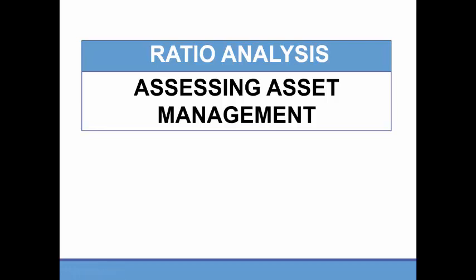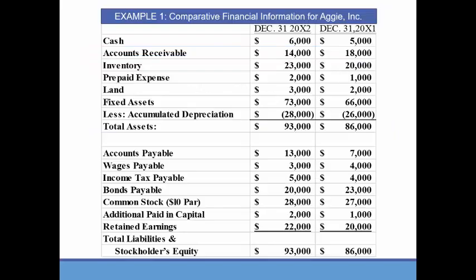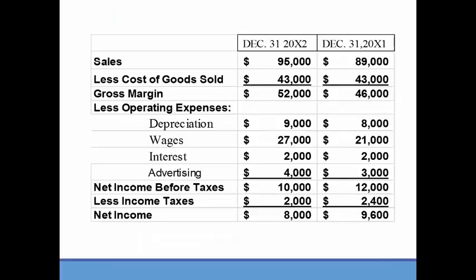Let's look at some ratios that are used by managers to assess how assets have been managed. We'll be looking at some specific assets and see how they're performing. We will use the financial statements for Aggie, Inc., so have those available for reference — the balance sheet and the income statement.